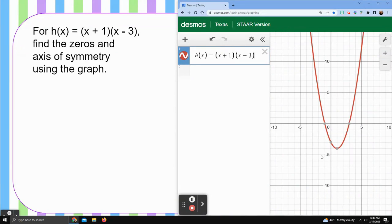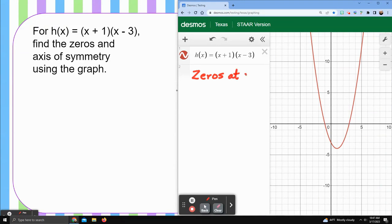So let's write all of that for ourselves. So we have zeros at X equals negative one and three. Remember those were here and here. And then we have our axis of symmetry at X equals, and that was here. That was at positive one. So my axis of symmetry, that's my equation for it. X equals one.